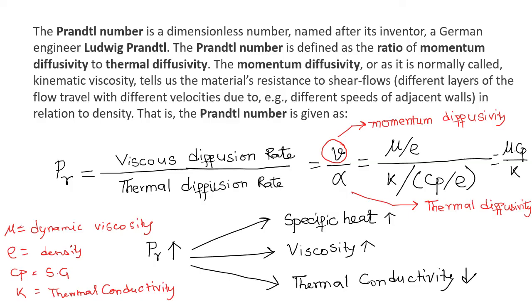Prandtl number is the ratio of the viscous diffusion rate divided by the thermal diffusion rate. Viscous diffusion rate means the momentum diffusivity and the thermal diffusion rate is the thermal diffusivity. We can write ν in terms of μ by ρ, where μ is the dynamic viscosity and ρ is the density. And α can be written as k divided by Cp by ρ, where k is the thermal conductivity, Cp is the specific heat and ρ is the density. So, we can write it as μ into Cp divided by k.